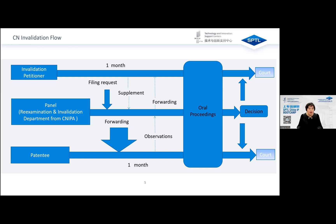However, the patentee could also keep silent at this stage and wait until the oral proceedings to make observations. The panel will forward the patentee's observations, if any, to the petitioner. Regarding the panel's forwarding, if both the petitioner and the patentee file their observations via CPC — a dedicated electronic system used by CNIPA — the panel will forward documents by CPC as well. However, if either party files documents by mail, then the panel will forward documents by mail too. Different time costs for these two forwarding manners will sometimes decide whether the petitioner or the patentee is active or passive, which will be discussed later.